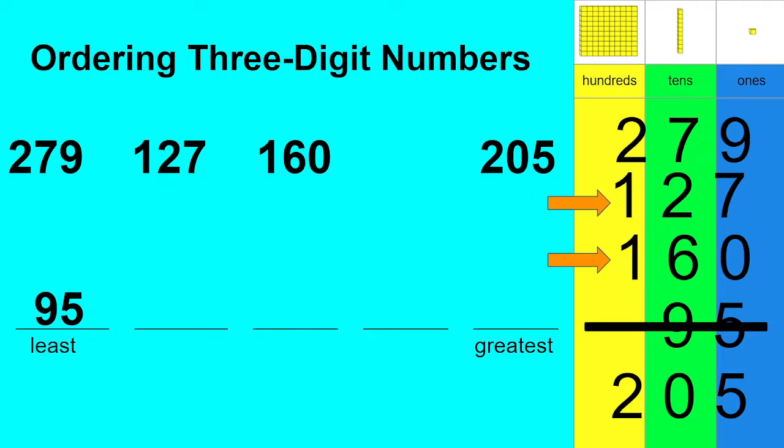In 127, there are two groups of 10. In 160, there are six groups of 10. Which one's smaller? Two groups of 10 or six groups of 10? That's right, it's two groups of 10. So 127 is the smallest or the least.